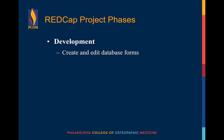A REDCap project database has multiple stages. The first stage is development. At this stage, you create your project and design your database or survey forms. You'll want to test these as much as you can to make sure you're collecting all necessary information and that the flow of information works well for your project. You'll also want to make sure that any special things you do, like branching logic or calculated fields, are working correctly.